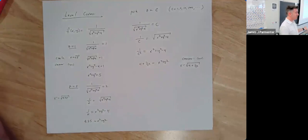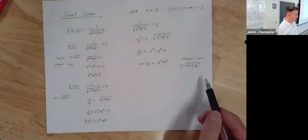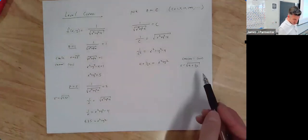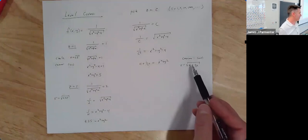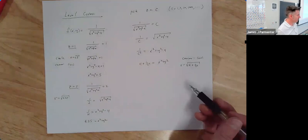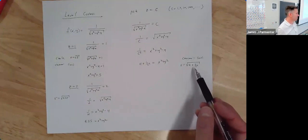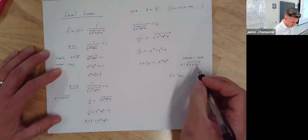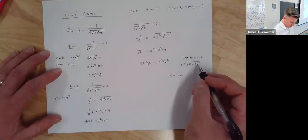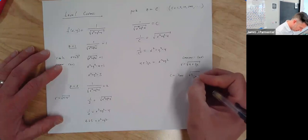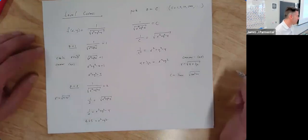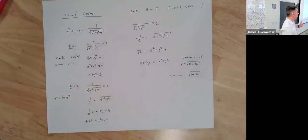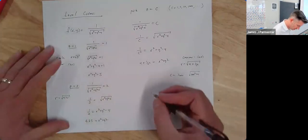As c gets larger and larger, this radius gets closer and closer to 2. If c gets closer to zero, this radius gets really, really big. For example, if c was 1/1000, you'd have the square root of 1,000 squared plus 4, which is pretty close to 1,000. So if c is super small, the radius gets really, really large.